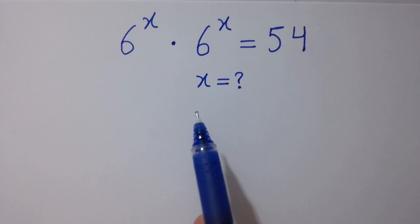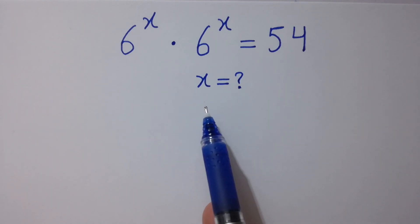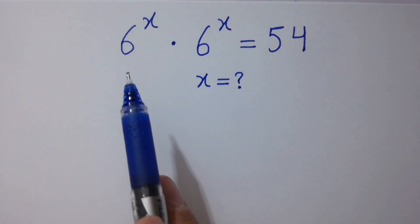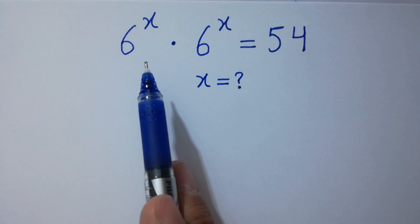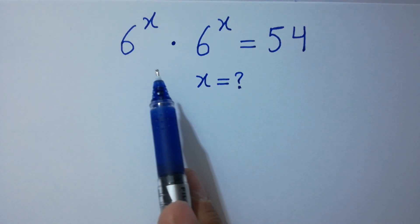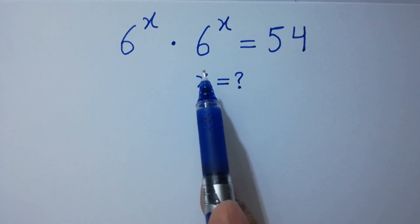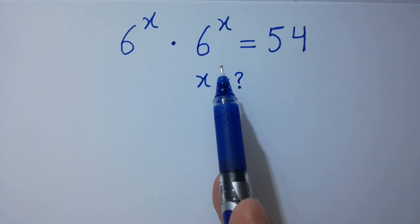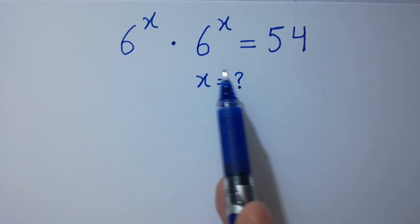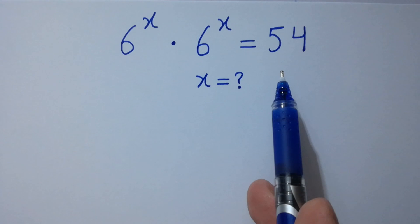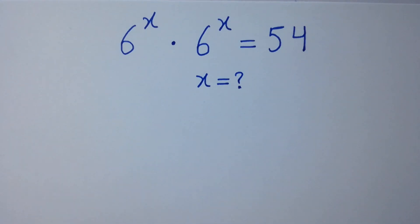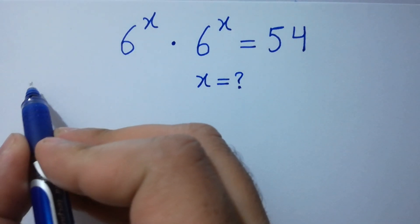Hello friends. Find the value of x if 6 to the power x times 6 to the power x equals 54. Let's have a solution.